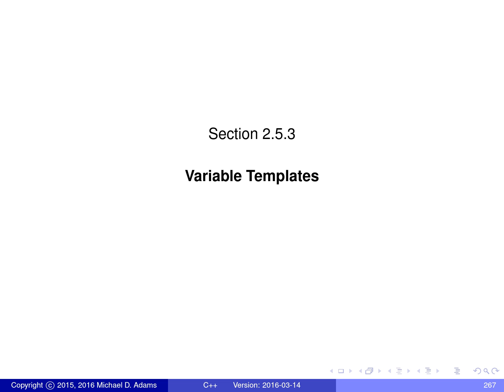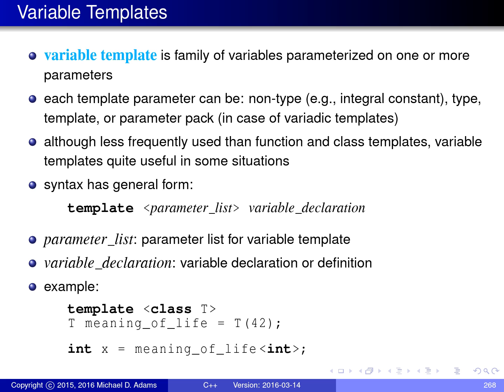In this section, I'm going to be talking about variable templates, where a variable template is a template used to generate a family of objects or variables. A variable template is simply a family of variables that are parameterized on one or more parameters, and these parameters can be of various different flavors.